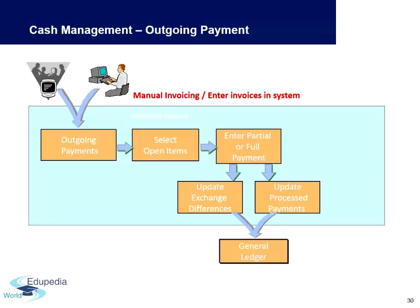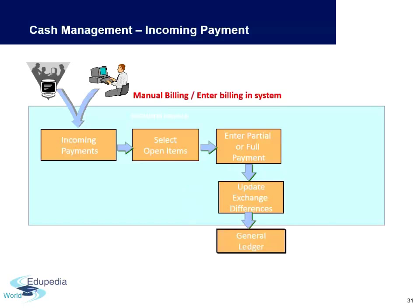In large companies with international transactions, exchange rates must be monitored — the rate at the time of transaction may differ when actual payment is received or made. The cash management team also processes payments, chases customers for partial payments, and these transactions flow into the general ledger.